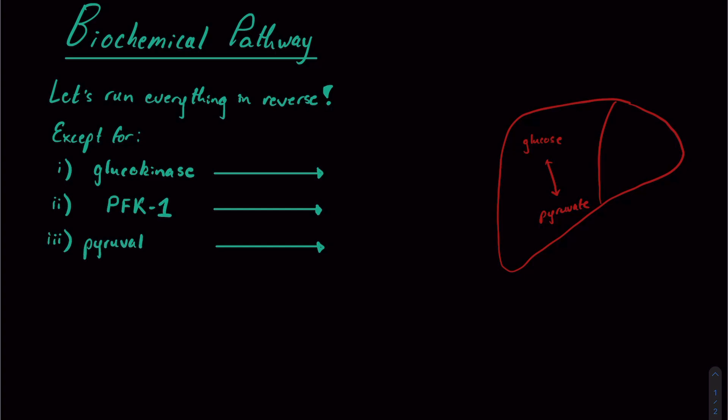And the final one will be pyruvate kinase. This is the final enzyme in our glycolysis pathway that's actually going to create our pyruvate that we created from glucose. So then that begs the question, what enzymes are we going to use to circumvent these irreversible pathways?